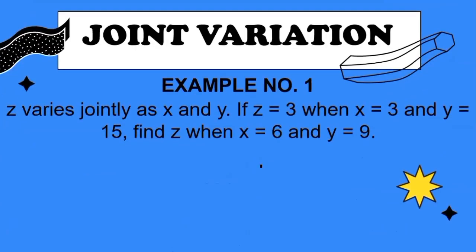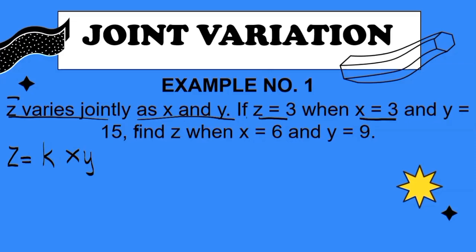Let us now have our first example involving joint variation. Z varies jointly as X and Y. If Z is 3 when X is 3 and Y is 15, find Z when X is 6 and Y is 9. Just like with the previous examples with direct and inverse, translate this into an equation. So we'll have Z equals KXY. From the first statement, Z is 3, X is 3, and Y is 15 — substitute this into the equation.